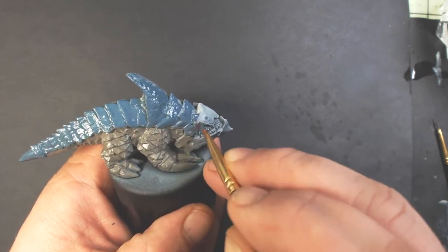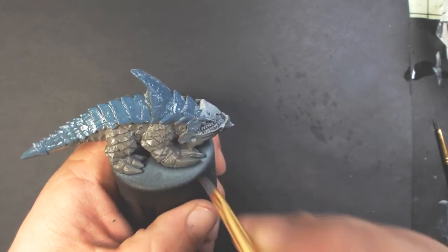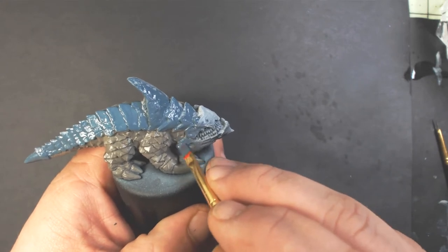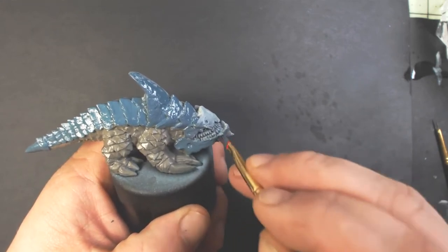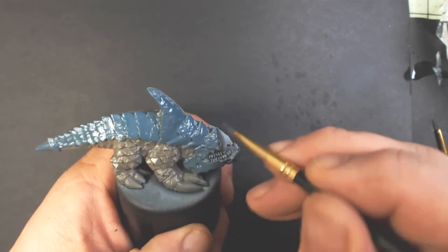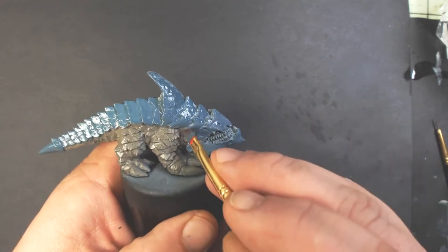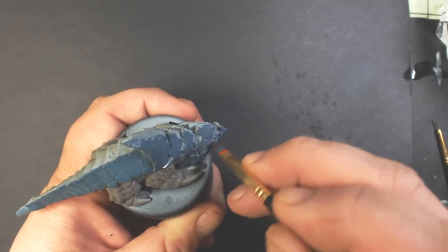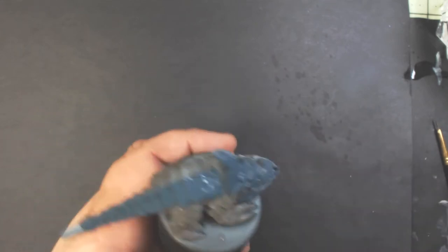And we're also going to paint the plates around his head and his lower jaw. Basically everything but the teeth there. And we'll do the same thing on the other side.